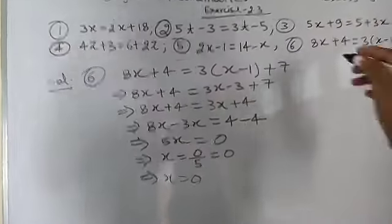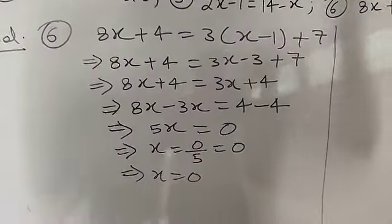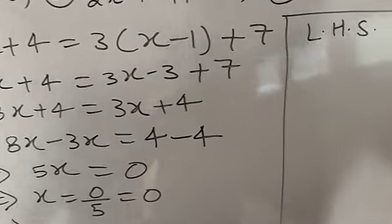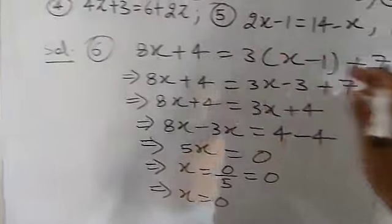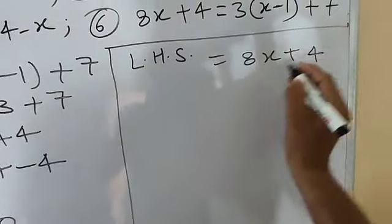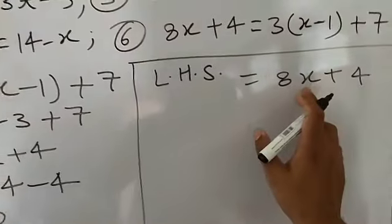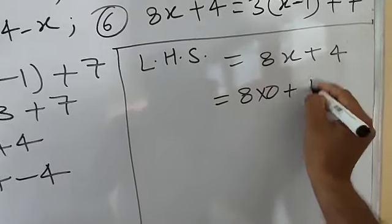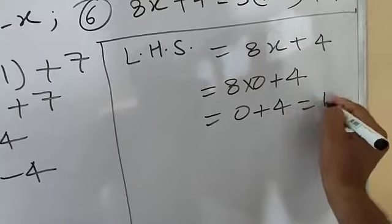Now you need to check the solution. First I will write the left hand side. In the equation, the left side is 8x plus 4. Putting x equal to 0: 8 into 0 plus 4. 8 into 0 is 0, plus 4 equals 4. So after putting x equal to 0 in the left hand side, you get 4.